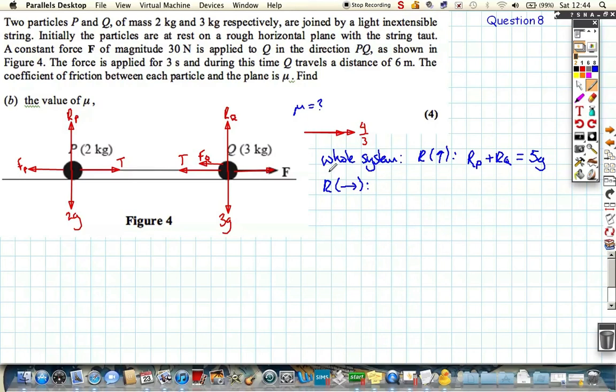We've got F, which is 30 Newtons acting to the right, and then we've got minus, well, we've got combined friction, so we've got the friction at Q and the friction at P, and they're both acting negatively. So this combined resultant force is equal to the mass, or in this case, the combined mass of 2 plus 3, multiplied by acceleration. So this is the force is equal to the mass times acceleration. We can sort this out.